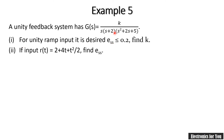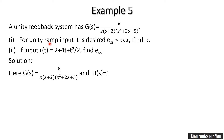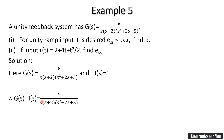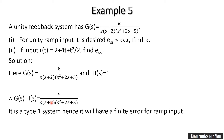First we will find the type of system, because we have to find E_ss for ramp input. G(s) is given and since it is a unity feedback system, H(s) equals 1. Therefore G(s)·H(s) equals G(s). Looking at the power of s in the denominator, it is s raised to power 1, so it is a type 1 system. For a type 1 system, the ramp input gives a finite steady state error.